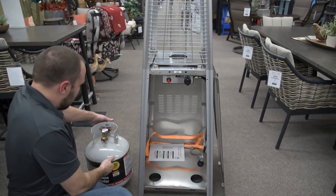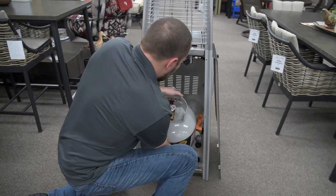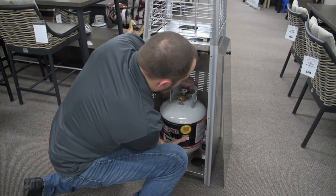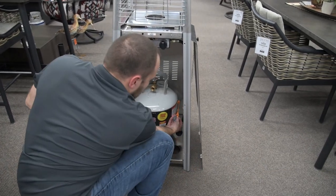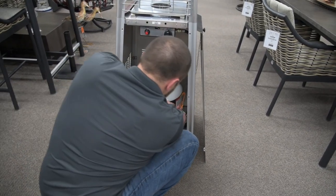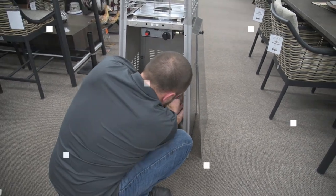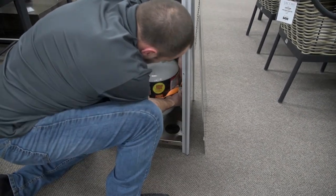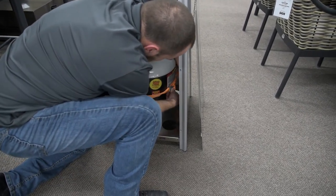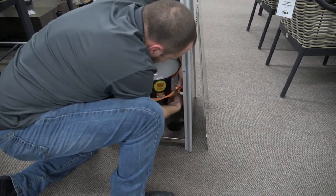I've got my standard five-gallon bottle. I'm going to place it right in here. It does come with this convenient little strap right here. You can use it or not, it's completely up to you, in case you want to move the heater with the tank inside so it doesn't jostle around as much.